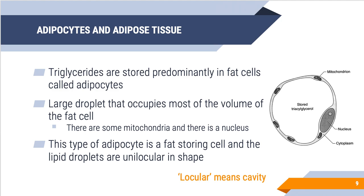Triglycerides are typically stored in fat cells called adipocytes. Within the adipocyte, triglycerides form a large droplet that occupies most of the volume of the fat cell. The nucleus and mitochondria are forced out to the sides or outskirts of this fat droplet. This type of adipocyte is a fat-storing cell, and we say the lipid droplets are unilocular — meaning one cavity — where all of these triglycerides are stored in that single cavity.